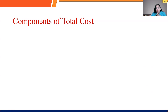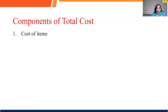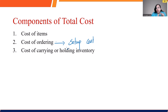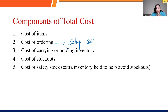Before talking about the assumptions and moving on to the numerical, you must understand what the components of total cost are. When you are purchasing the product, there are going to be plenty of costs involved. But the three major costs are: first, the cost of the product — also known as the purchasing cost; second, the cost of ordering — also known as the setup cost; and third, the carrying cost or holding cost. For the EOQ model, we are going to consider these first three costs.